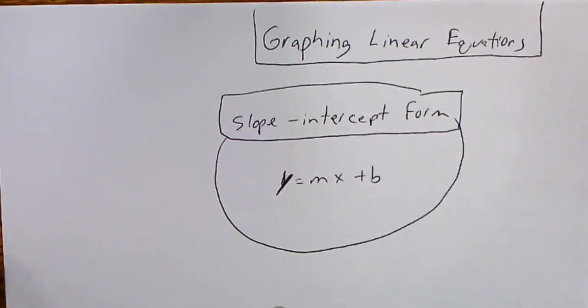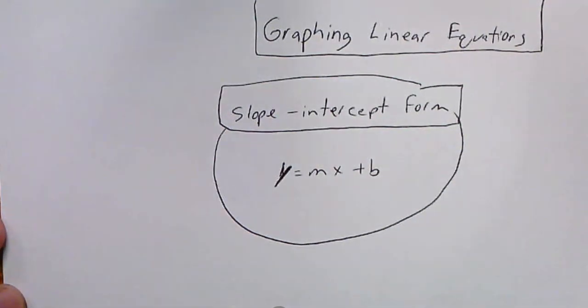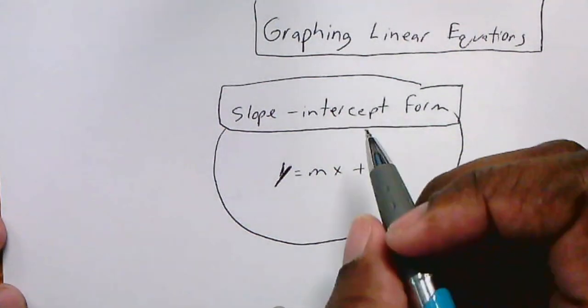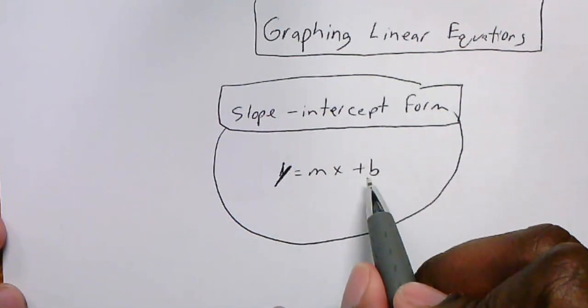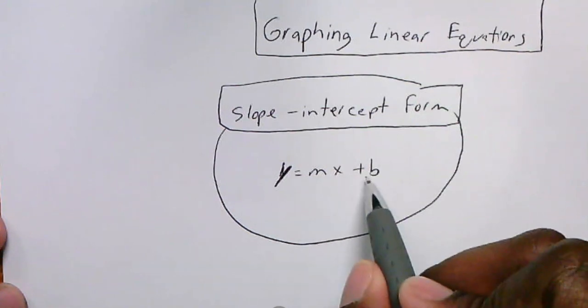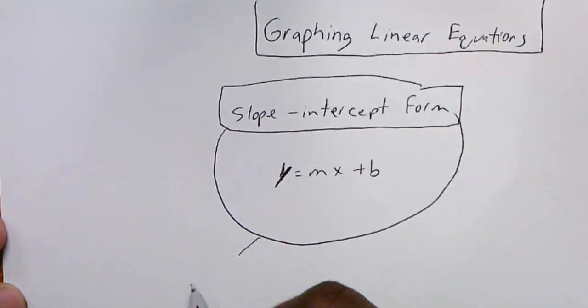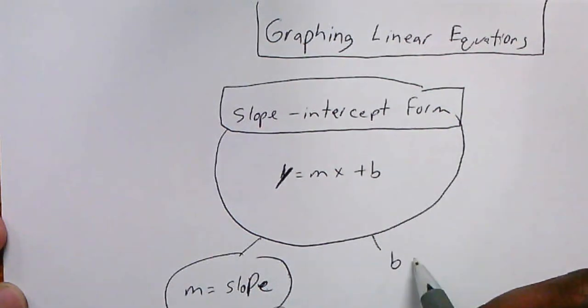Alright, so this video is about graphing linear equations. The first thing we need to know is what a linear equation in slope-intercept form is. Slope-intercept form is y equals mx plus b.